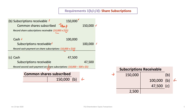Next, there's a second payment of cash on the share subscriptions, except that only 9,500 make that final second payment. So we take the 10,000 original minus the 500 that gives us 9,500 times $5, which is the debit to cash of $47,500, and a credit to the subscription receivable for $47,500. At the end of this transaction, the balance in the subscription receivable account is $2,500. After the first transaction, the balance in the share subscribed account is still $150,000.